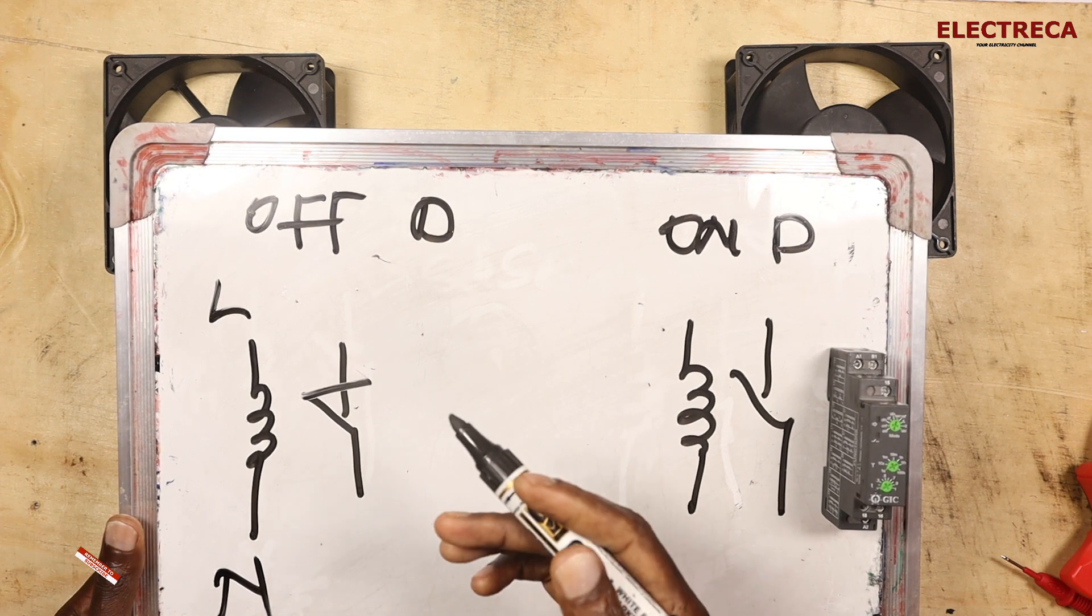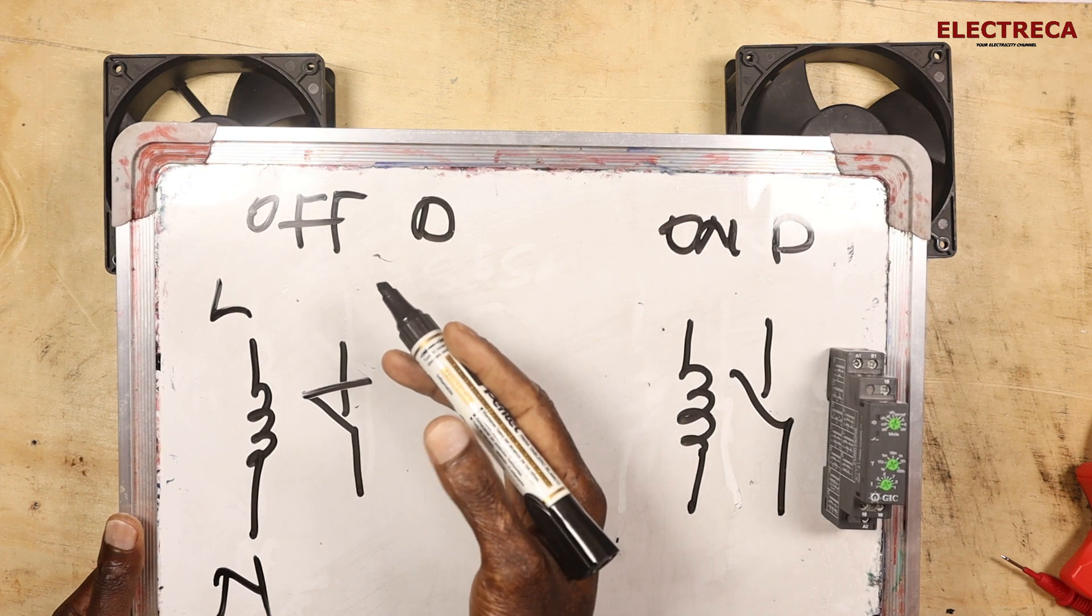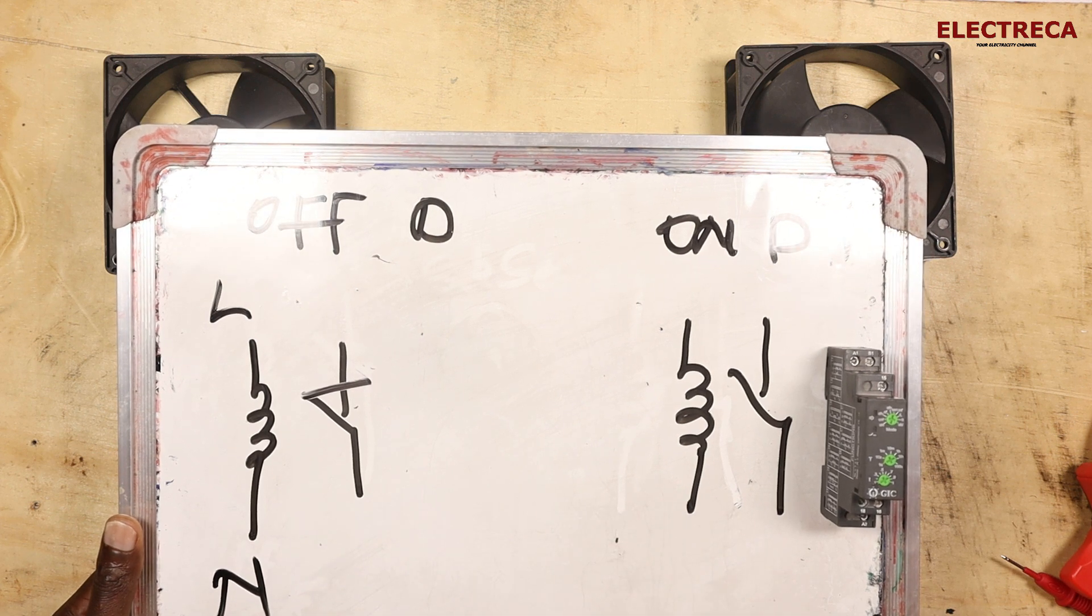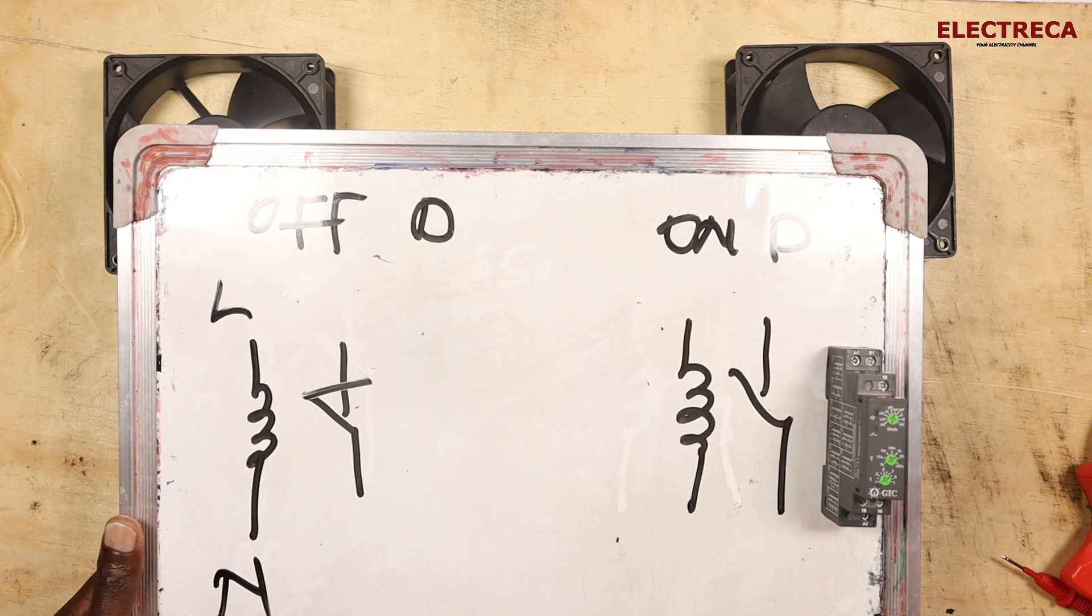And then you have set 30 seconds or maybe 30 minutes. That's off delay. So it will count down until when the 30 seconds elapses, then the siren goes off but the machine or the furnace is already on. That's off delay for you.